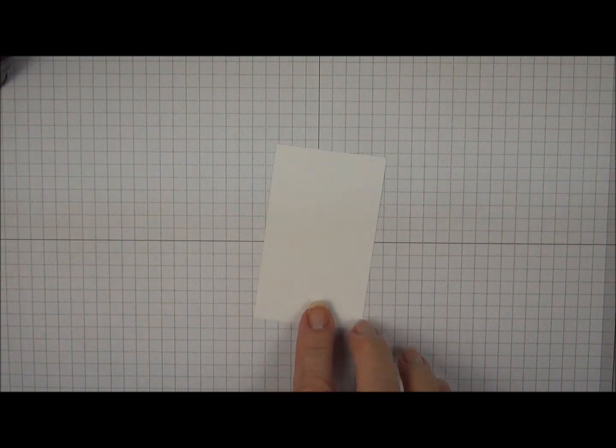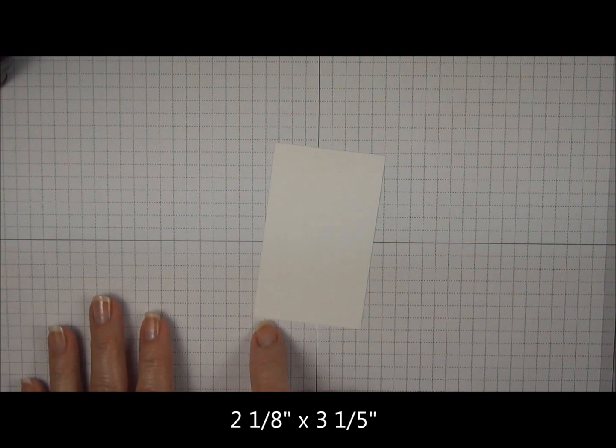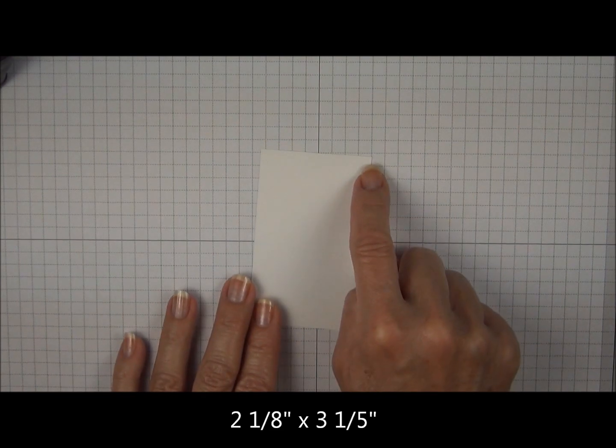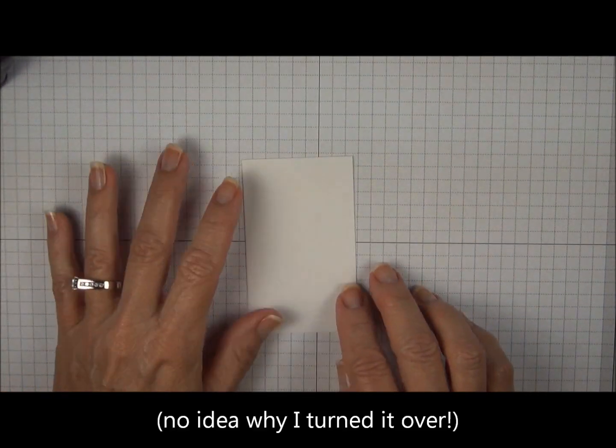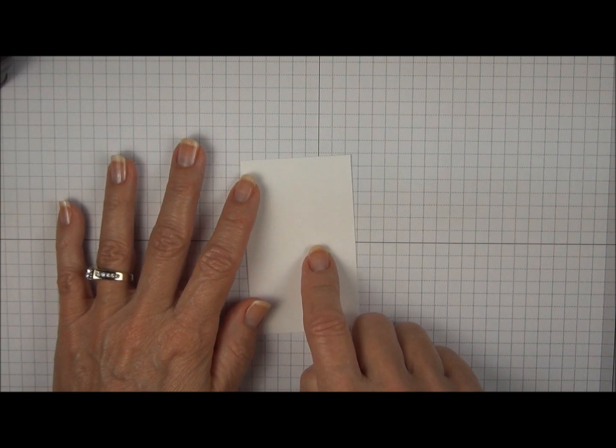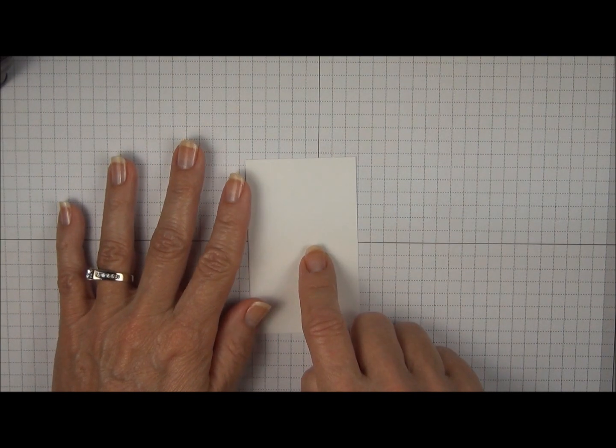We have another piece of Whisper White Card Stock. This is cut two and one eighth by three and a half and we're going to punch the larger butterfly out of the middle section first.